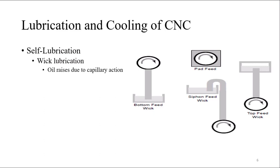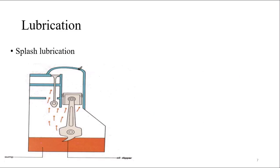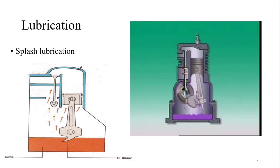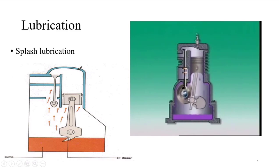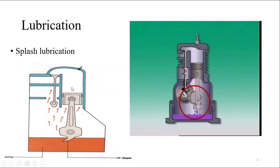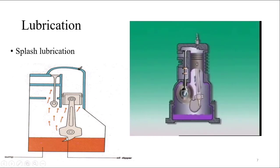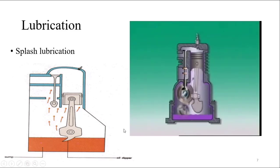It's a self-lubrication — it is called wick lubrication. Like when you dip part of your cotton inside water, it just moves up. Then we have splash lubrication. You can see in the video how splash lubrication works. In this case, your piston is moving up and down. A special element added onto the piston, when it moves down, splashes the lubricant onto the other internal parts of the engine. Similarly, this kind of splash lubrication is also used in the CNC machine. It's a very simple process.